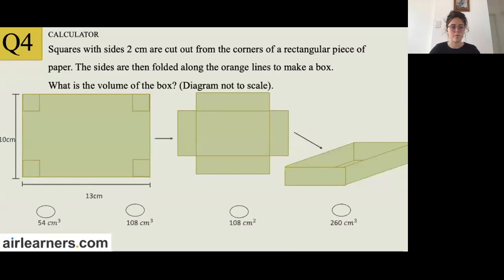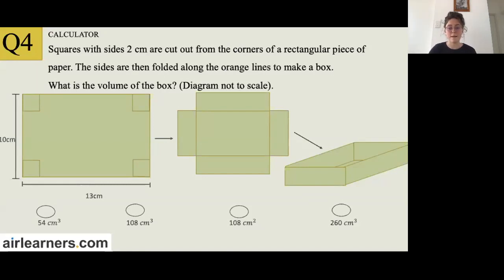Question four — a calculator question. Squares with sides of two centimetres are cut out from the corners of a rectangular piece of paper. The sides are then folded along the orange lines to make a box. What is the volume of the box? Note: diagram not to scale. Most images in NAPLAN are not to scale, so you won't be able to figure out the answer from diagrams, but they can still give you an idea of what the question is asking. For this question, write down all relevant information and label the diagram.